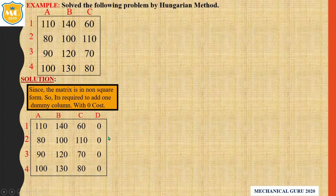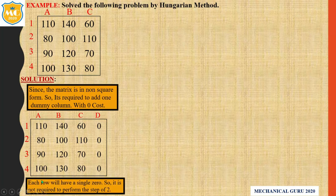Step number 2: row reduction. But here, in each row, the minimum number is zero. So directly you have to find out step number 3. Each row will have a single zero, so it is not required to perform step number 2. Directly go to step number 3.